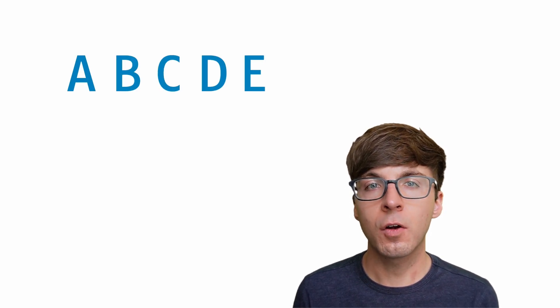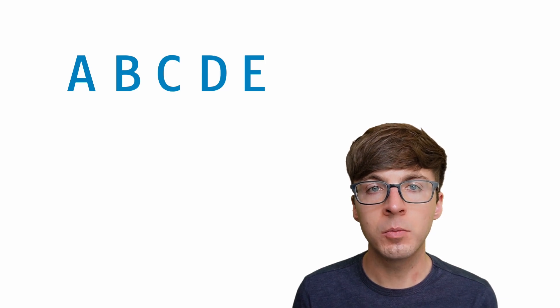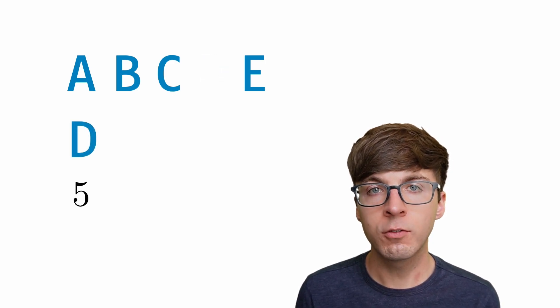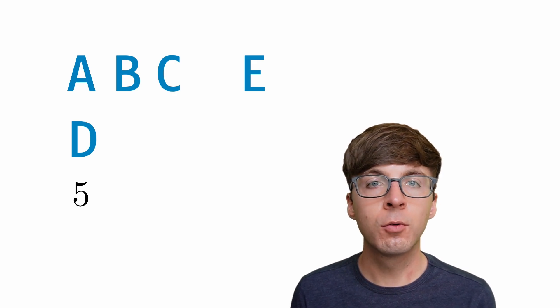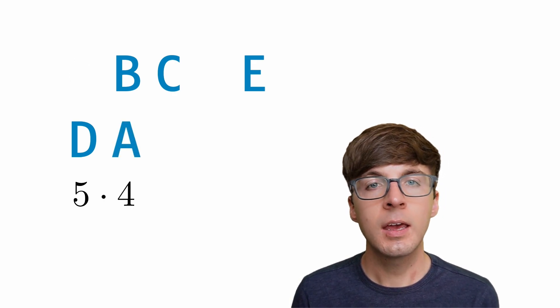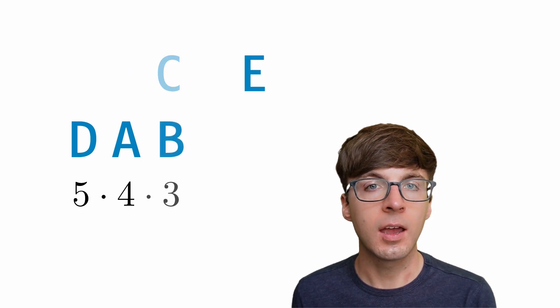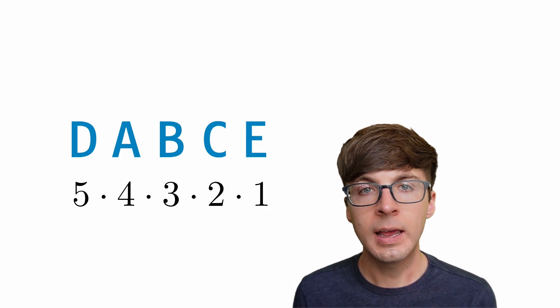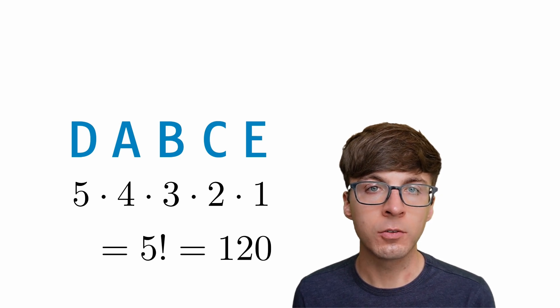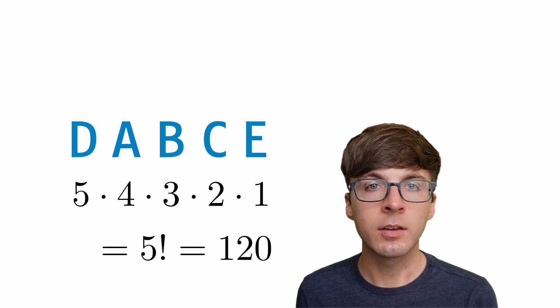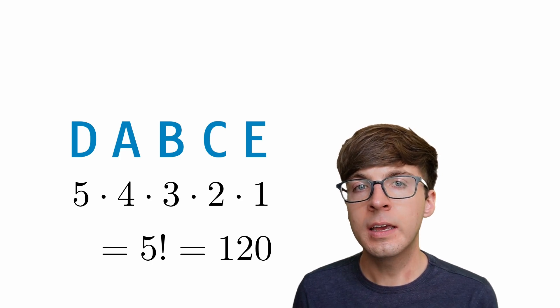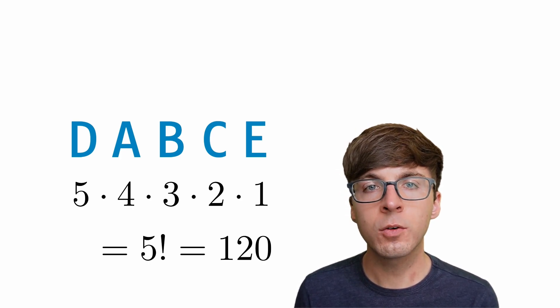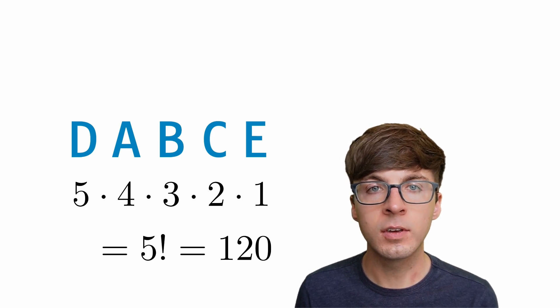Let's start with the factorial. Let's count the number of ways to rearrange the letters A, B, C, D, and E. There are five different letters, and we can pick any of them to be in the first position. After we pick one, there are only four letters left for the second position, then three for the third, and so on. We multiply all these values together and get 120, which we write as five factorial. So the factorial tells us how many ways there are to arrange distinct objects in a row.